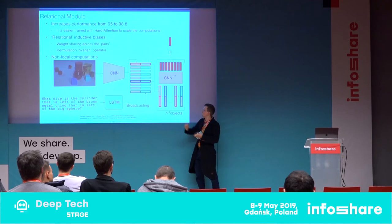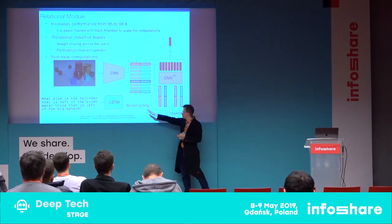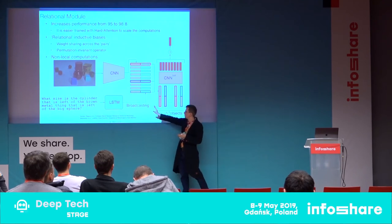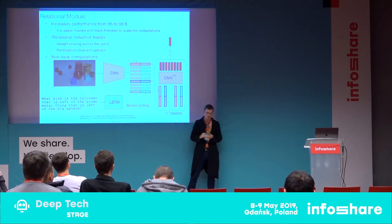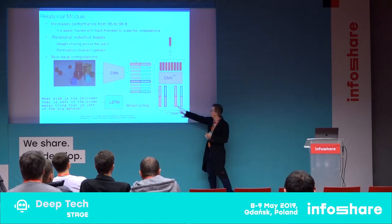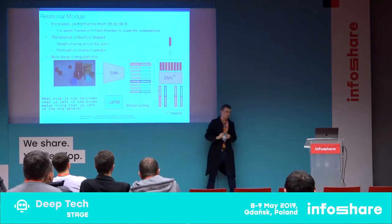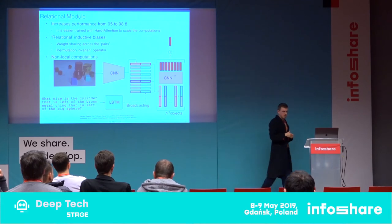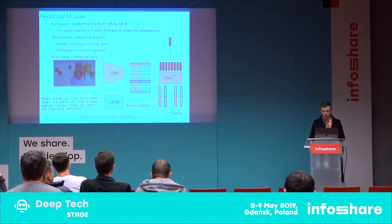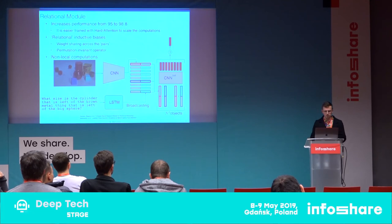Permutation invariance means we can swap objects and still get the same final representation. This is mathematically done by a summation operation — simple, but permutation invariant and suitable for this kind of problem. So we have CNN image vectors, LSTM question vector, we take arbitrary pairs, process with MLP, and use summation as a permutation-invariant operation to build a final representation.